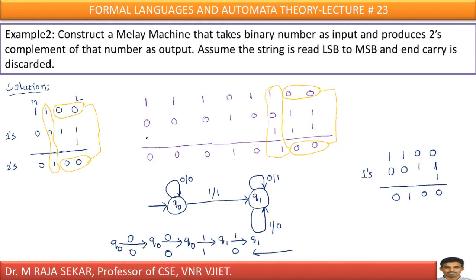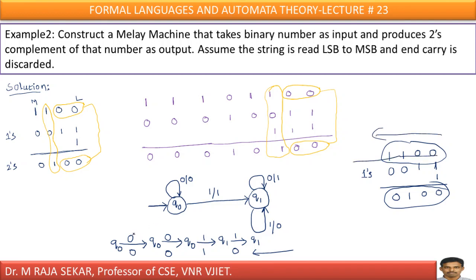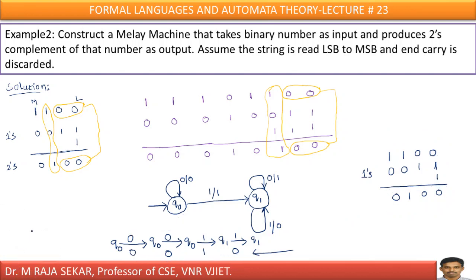You can also check this by feeding some input. For example, take the binary number 1100, whose two's complement is 0100. I must feed it from LSB to MSB, so I read it as 0011. Feeding 0011 through the machine gives output 0010, which read back in order is 0100. This confirms the machine is correct — it is simple and straightforward.